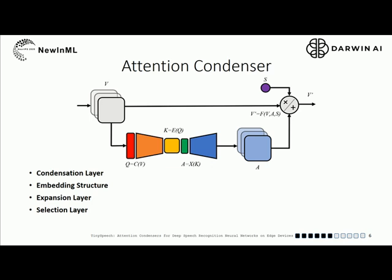The condensation layer condenses the input activations to reduced dimensionality and emphasizes activations in close proximity to strong activations. The embedding structure characterizes joint-local and cross-channel activation relationships — this is the trainable part of the attention condenser module. The expansion layer increases the dimensionality to produce self-attention values, and the selection layer produces the scaled input activations and self-attention values.